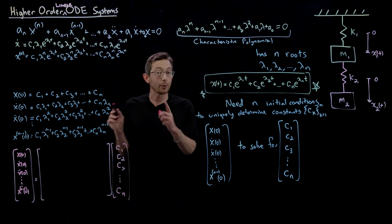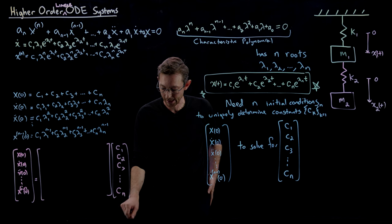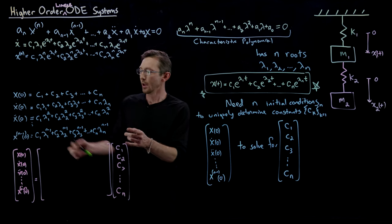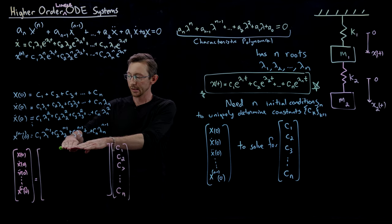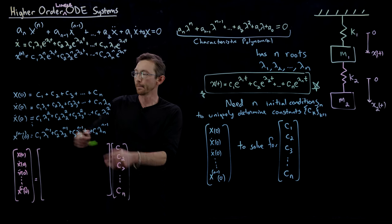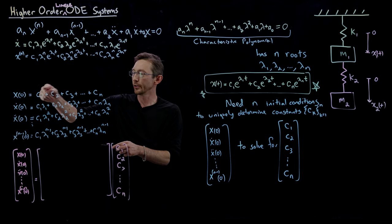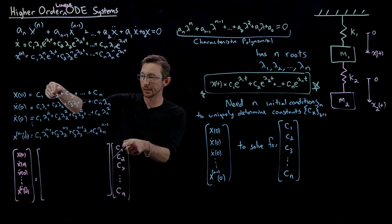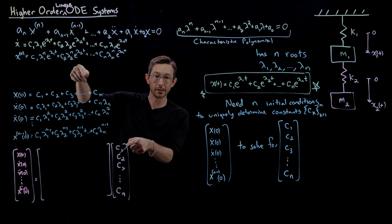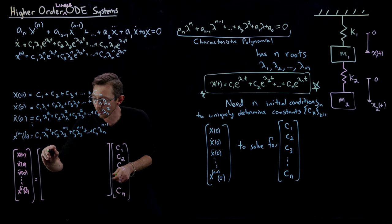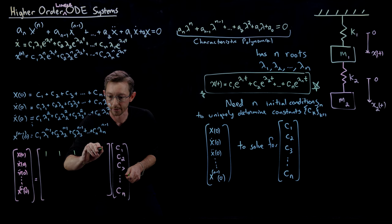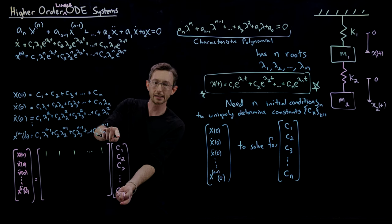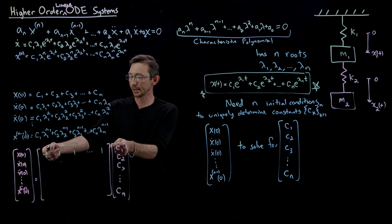Look how easy it is to write this matrix down. The first row — x(0) equals some numbers times this vector — all those coefficients are 1. It's c₁ + c₂ + c₃ + c₄, so it's literally a row of 1, 1, 1, ..., 1. If I take this row times the coefficient vector, I get my first equation.